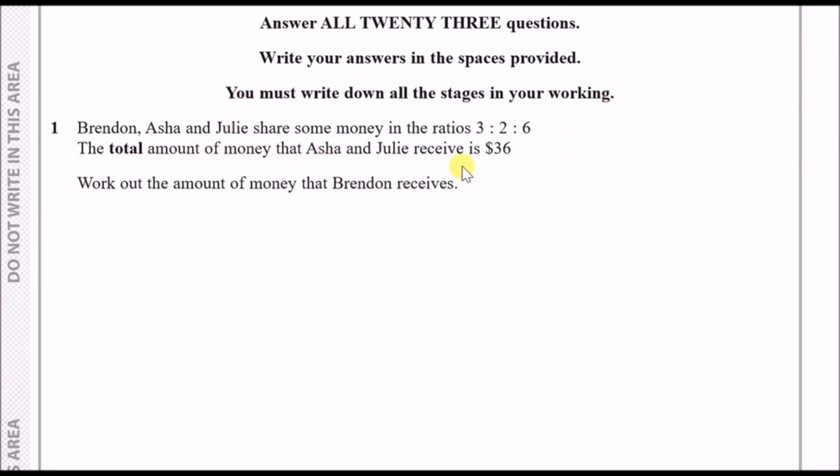The total amount of money that Asher and Julie receive, that is the last two parts by the way, is $36. Work out the amount of money that Brendan receives. When you look at these kind of ratio problems always look at the total amount and try to relate it to the ratios. In this case Asher and Julie represent the last two parts.